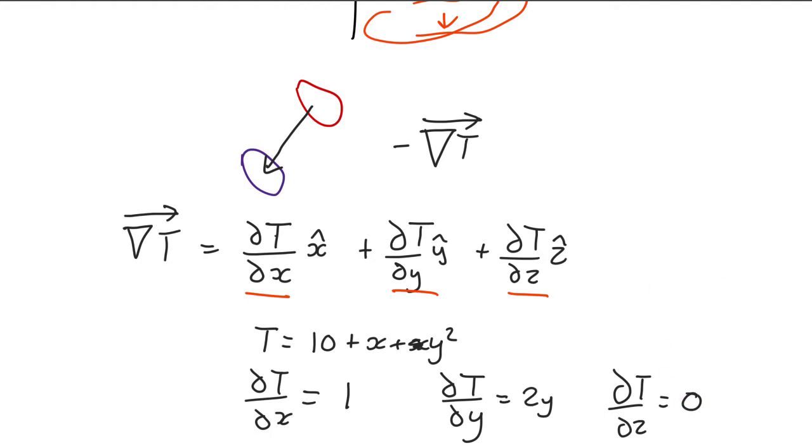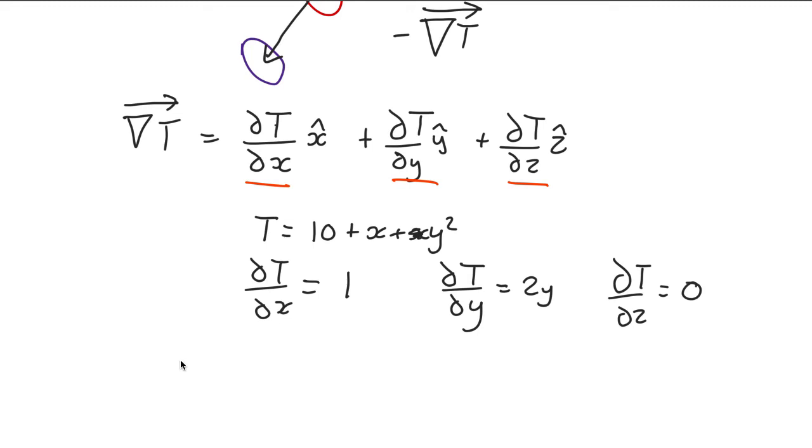So putting these all together, we can find that for this particular case, it's going to be 1 times the unit vector in the x direction, plus 2y times the unit vector in the y direction, and nothing in the z direction. So we can calculate this at various points. So for example, if we're at the location x equals 1, y equals 1, we can plug that into here, and we'll find that it's going to be x plus 2 times 1, y. And that will give us a vector for this at the location 1,1.